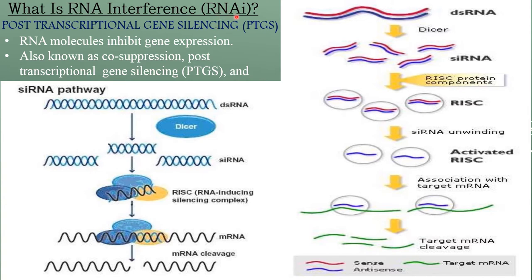Now, what is RNA interference or RNAi? Post-transcriptional gene silencing, also represented as PTGS — RNA molecules inhibit gene expression. It is also known as co-suppression and post-transcriptional gene silencing. A multi-step process is involved in this process.